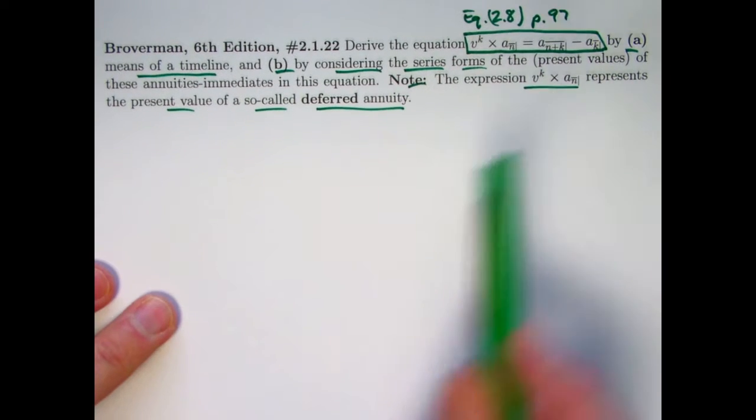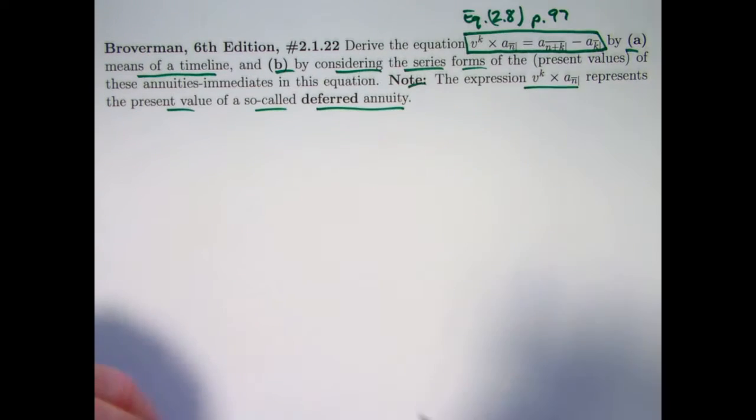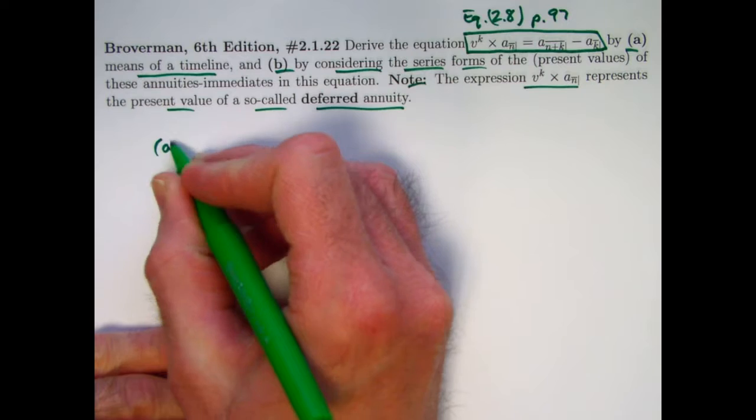And this, again, is the most simple way to think of the present value of such an annuity. All right, so let's think about a timeline here, part A.